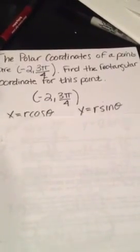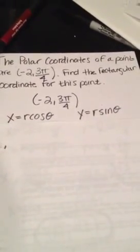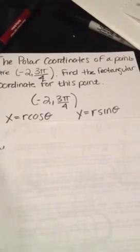So you have negative 2 and 3 pi over 4 and you're trying to find the rectangular coordinates, so you're using x and y.